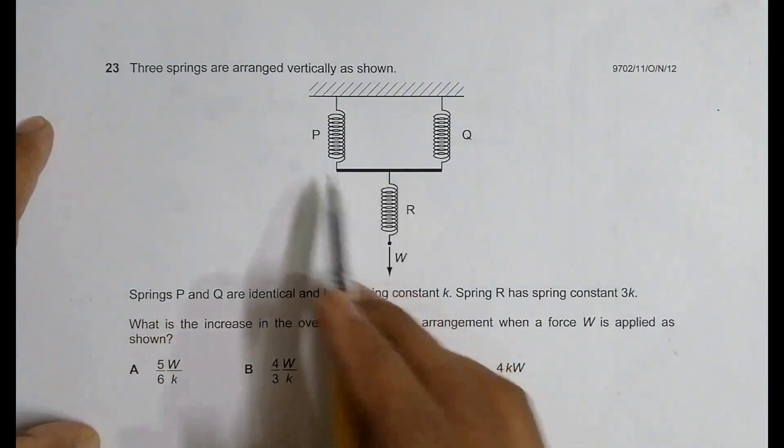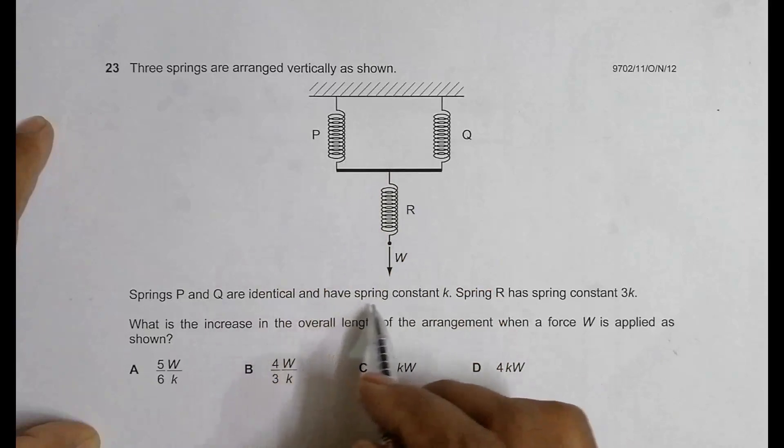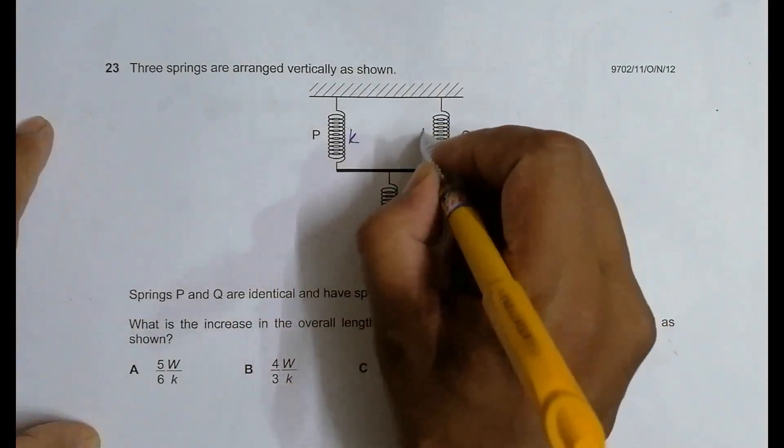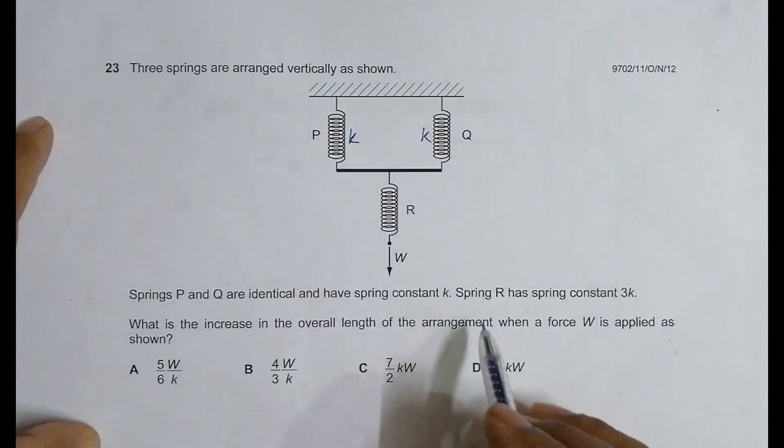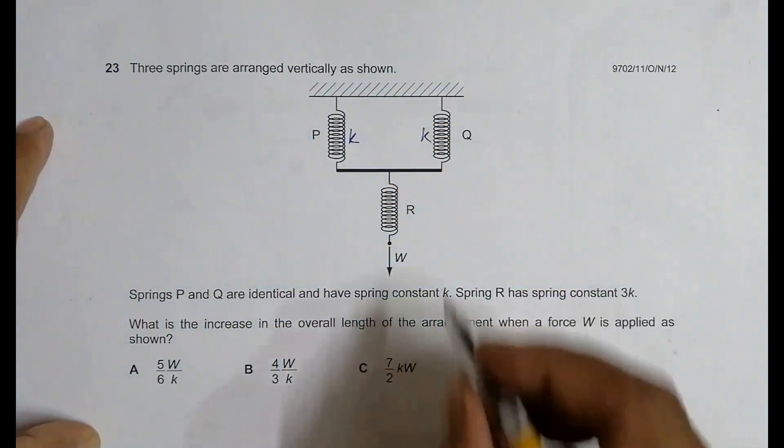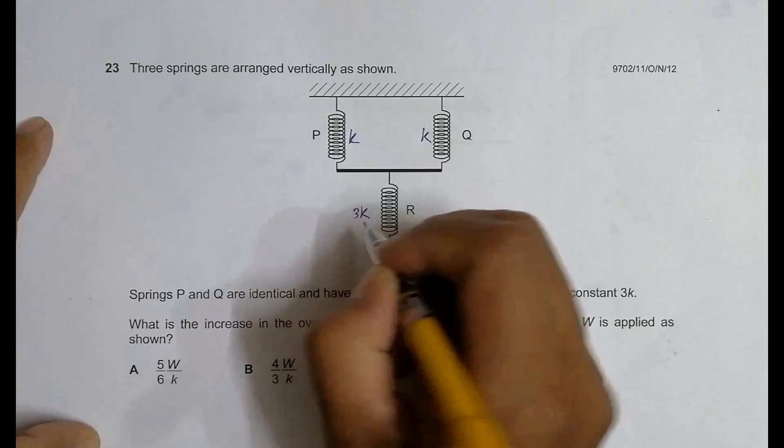Springs P and Q are identical and have spring constant K, so it has got K and it has got K as well. Spring R has a spring constant 3K. So it's a stronger spring, let us say tighter spring.